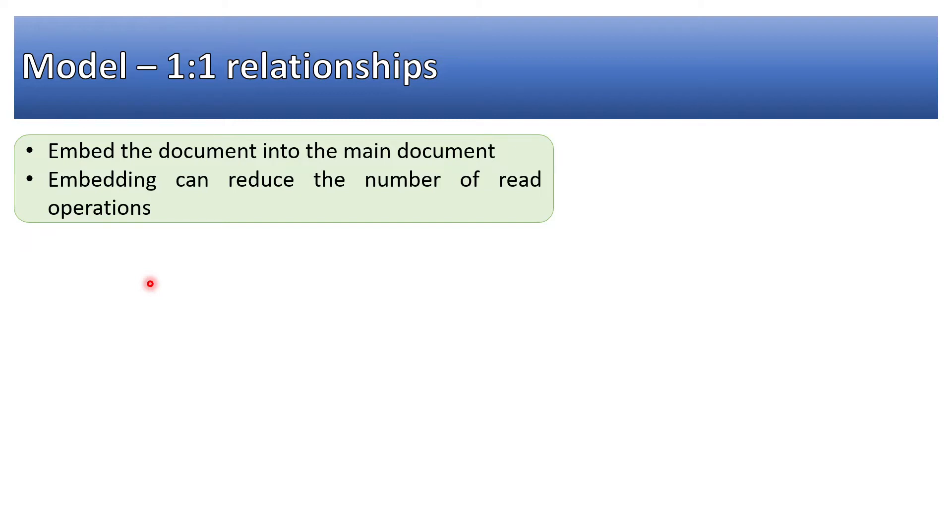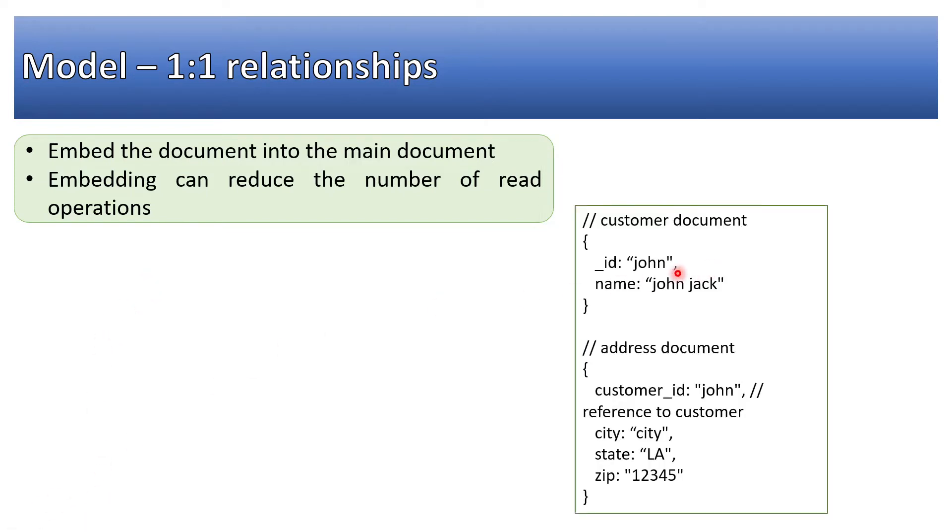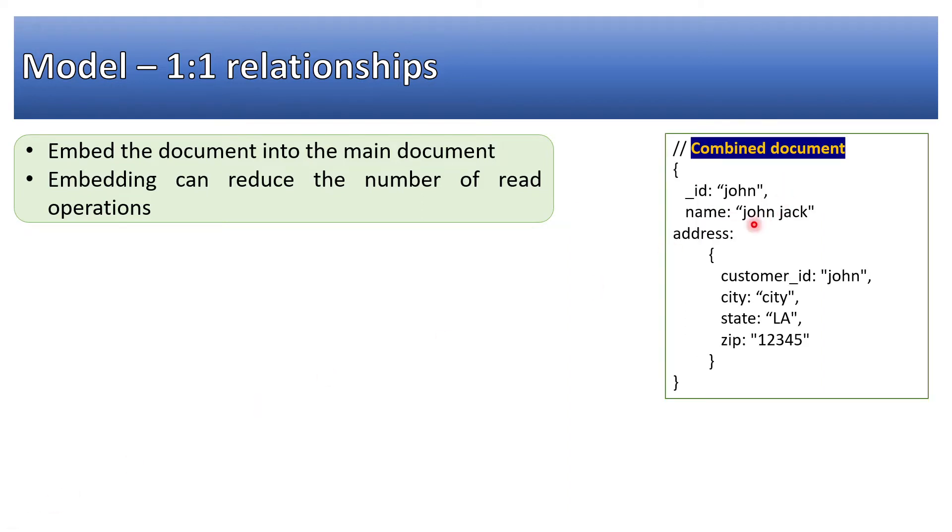Versus if the data is there in two collections, either we will have to use dollar lookup or we will have to query multiple times. So this is the example: customer document, address document. There are two documents. After embedding, this is assumed that customer is having one address combined: ID, name, and address is merged into that—it is embedded.